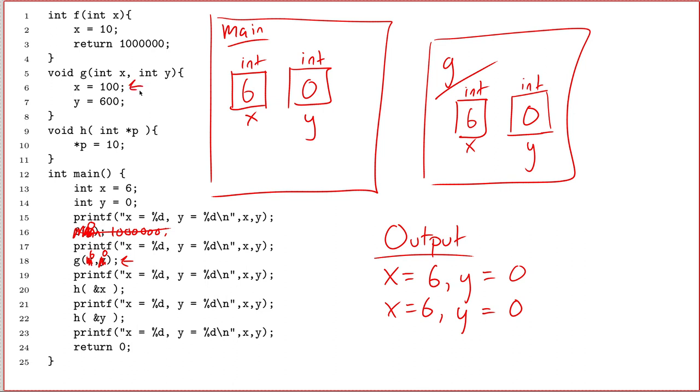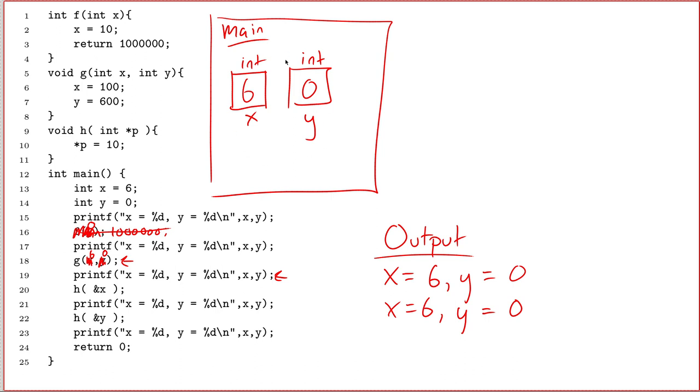Line number 6, the first line of g. Well, that sets x to 100. And in the scope of g. And so I set the variable x to have the value 100. And then line number 7, set y to be equal to 600. So this is also sort of a red herring, because we know that g has its own variables called x and y. It never does anything with them after this. And then the function ends on line 8. And g doesn't even return a value. So we go in and destroy the scope of g. And then that's the end of that. We go back to line number 19. We're back in the scope of main. We can see that even though g had variables x and y, they weren't the same ones that main had. And so on line 19, we print out again x equals 6, y equals 0.